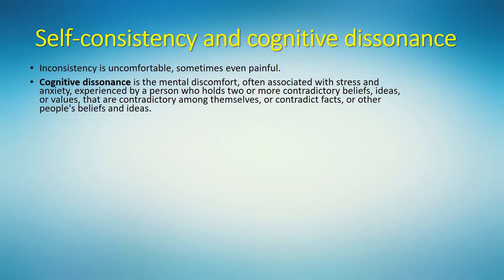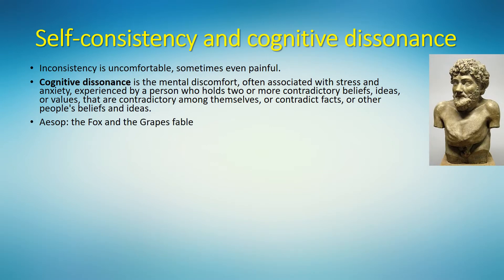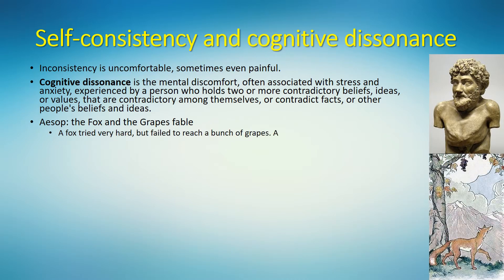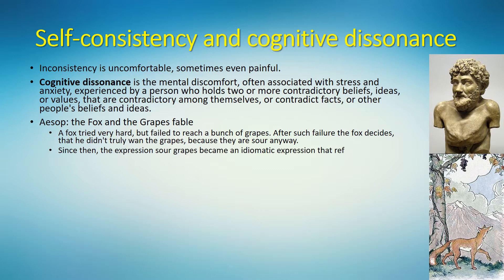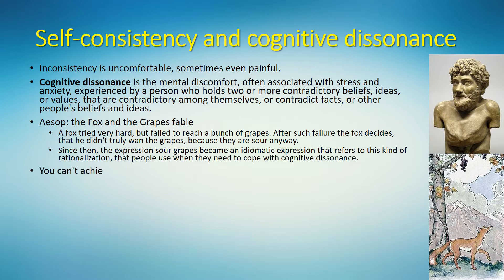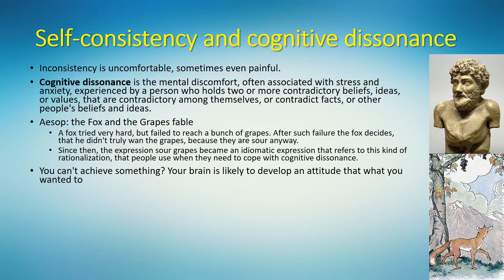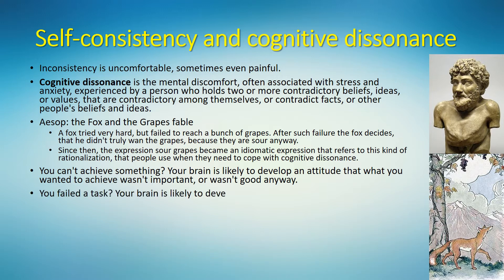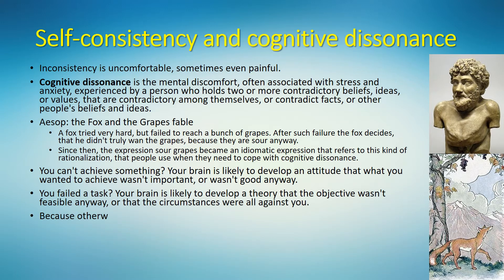Remember the ancient Greek fabulist Aesop? He wrote a fable called The Fox and the Grapes, in which a fox tried very hard but failed to reach a bunch of grapes. After failing, the fox decides he didn't truly want the grapes because they are sour anyway. Since then, the expression 'sour grapes' has become an idiom referring to this kind of rationalization people use to cope with cognitive dissonance. You can't achieve something? Your brain is likely to decide that what you wanted wasn't important or wasn't good anyway. You failed a task? Your brain may develop the theory that the objective wasn't feasible, or that circumstances were against you — because otherwise you have to live with an inconsistency between your self-esteem and the facts that challenge it.